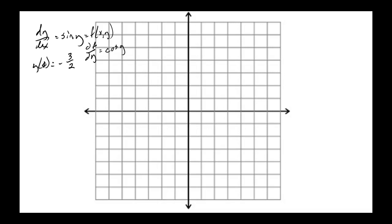Theorem 1.2.1 guarantees the existence of a unique solution curve passing through any point (x₀, y₀) in the plane. Our point here is (0, −3/2). Now let's use a direction field to sketch an approximate solution curve for that initial value problem.